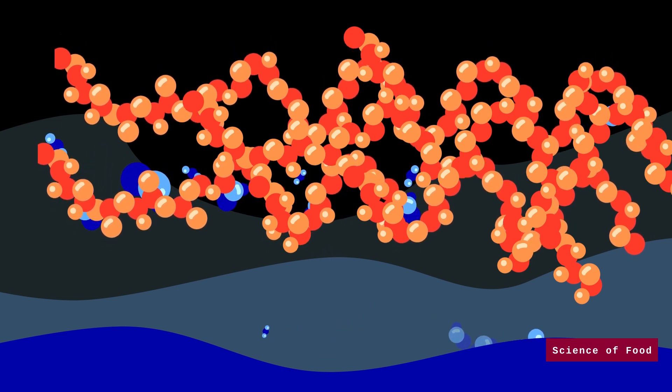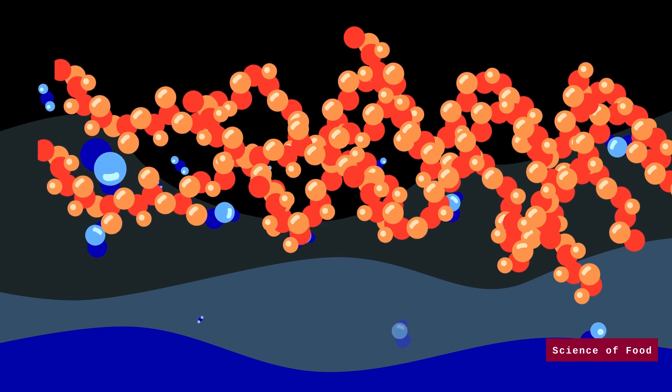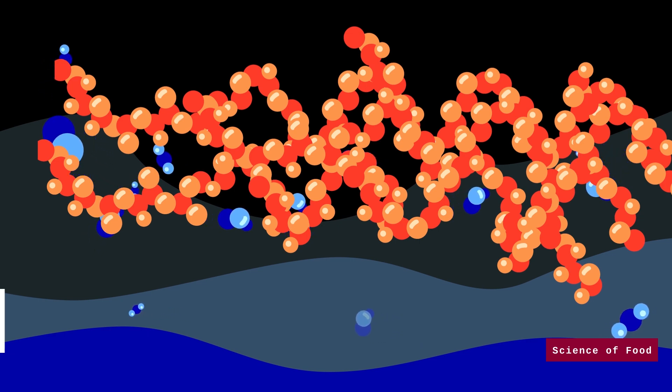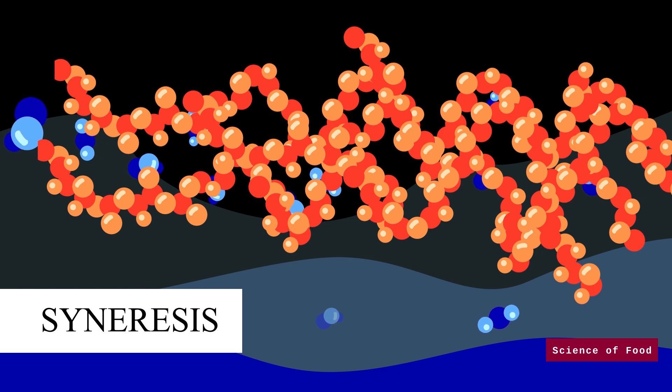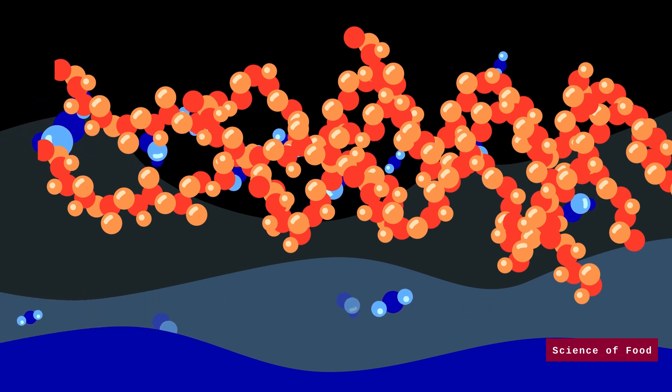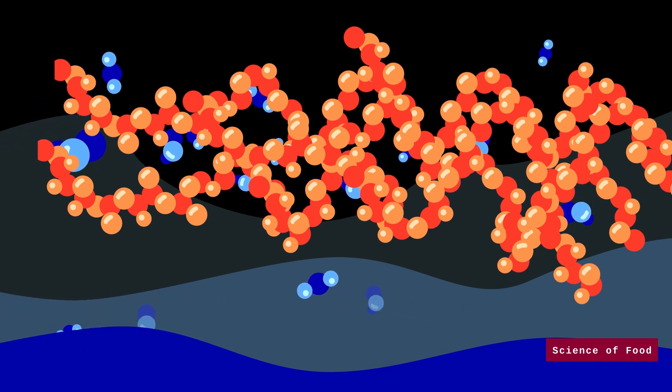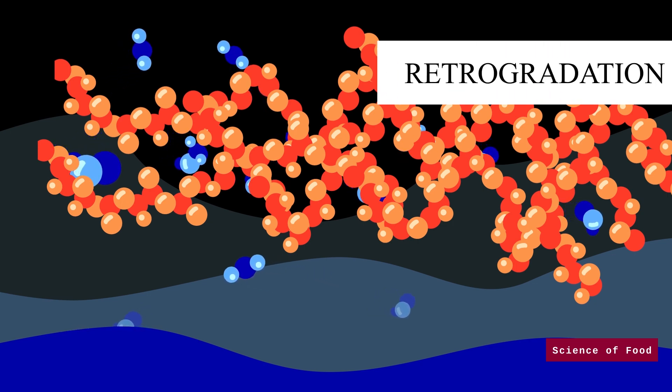Over time, as starch molecules shrink, water is gradually released from the gel, which is termed as syneresis. As water molecules are expelled, starch-to-starch hydrogen bonds start to form again, and this is called retrogradation.